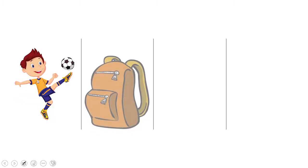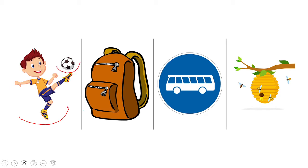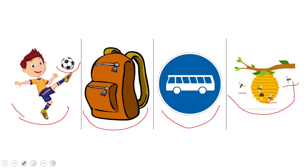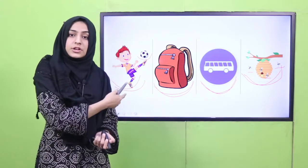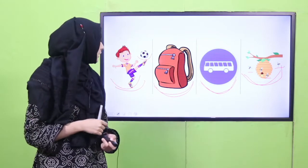Now moving on — main aapko bataungi ke hamne in mein se kaun kaun se objects dekhey aur unke names kya thay. Those objects were: a boy kicking the ball, bag, bus stop, and beehive. Now I am going to say the names with the sound, aur aap log mere saath repeat karna hai: B — boy with ball, B — bag, B — bus stop, and B — beehive with the bees. One more time with the sound: B — boy, B — bag, B — bus stop, and B — beehive. So these were the objects — aapko yaad hoga, aapne cards bhi inke find out kiye thay. These were the objects with the same sound. And what is this sound? B — everyone has to do it: B. Okay, so this was the lesson.